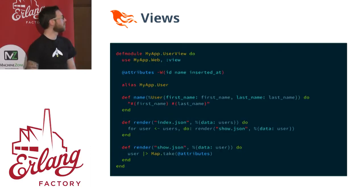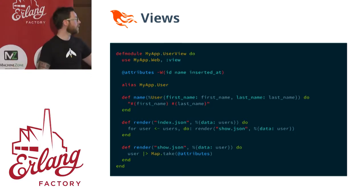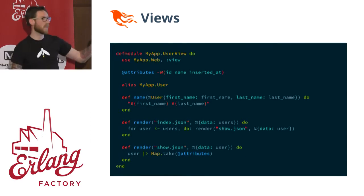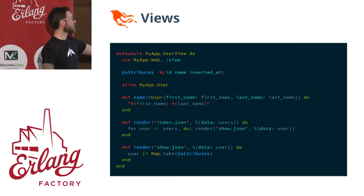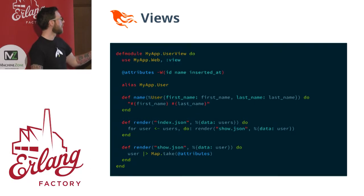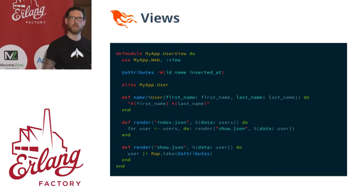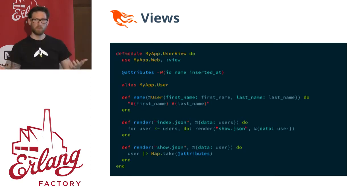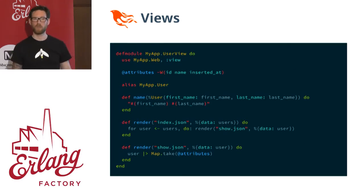This is what a view typically can look like. If you have a user with fields of first name and last name, but you want to use a name helper in the view, you can use name/1 passing in the user and it'll return the concatenated first and last name. You can have functions like render index.json — if you have a JSON API, you don't care about rendering HTML anymore. You can just return a map that will end up getting serialized into JSON.